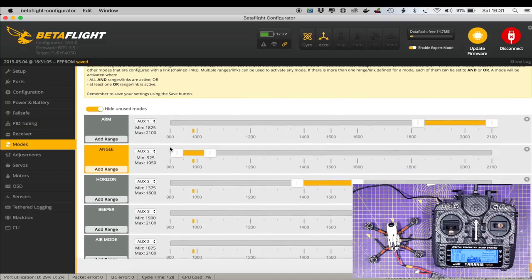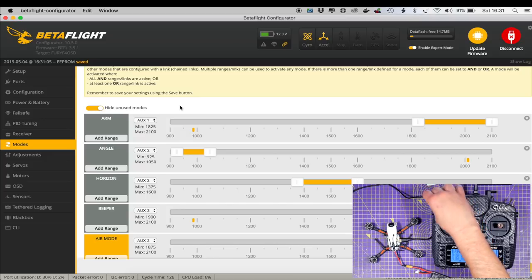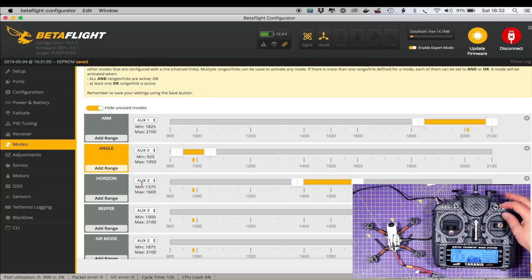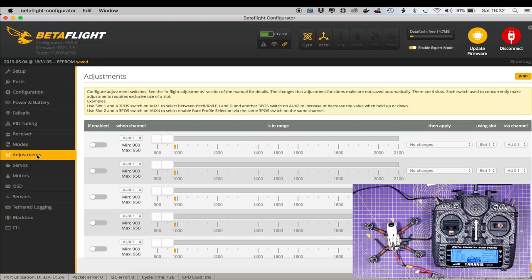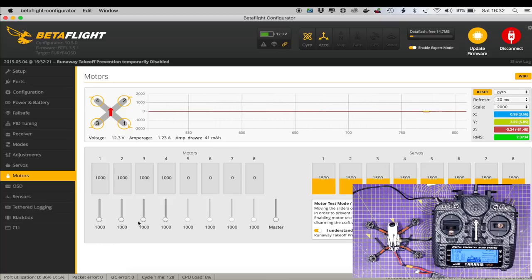Modes, so I have my setup in my usual configuration: angle, horizon, acro, beeper. That's good. Just once we don't have to do anything there. Motors, so let's do a quick test that everything is working as we expect. Props are off, click the switch, let's crank these up. Motor one, motor two, motor three, motor four, excellent.